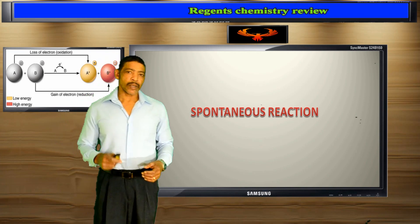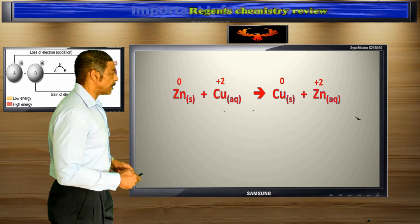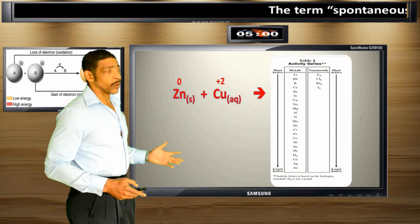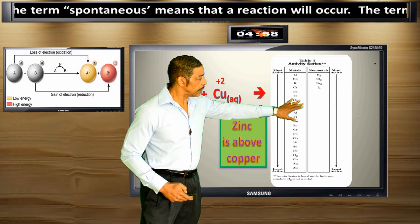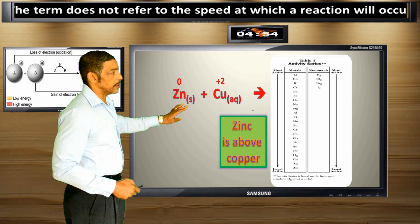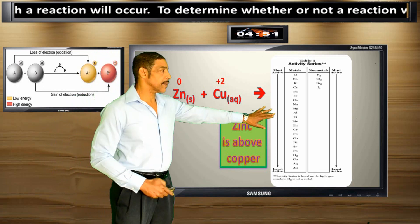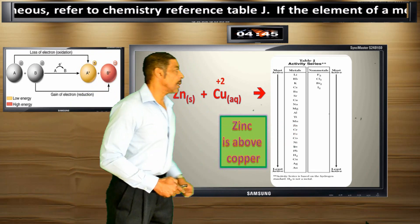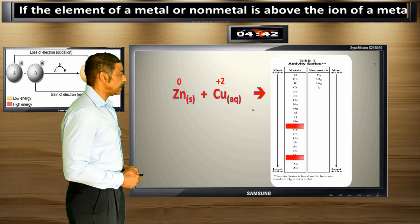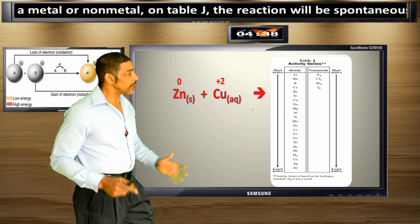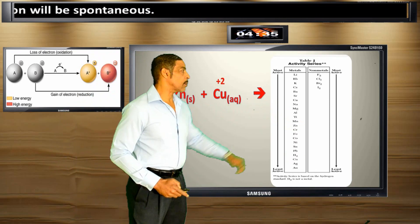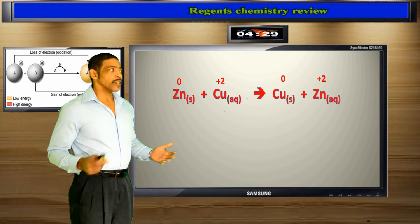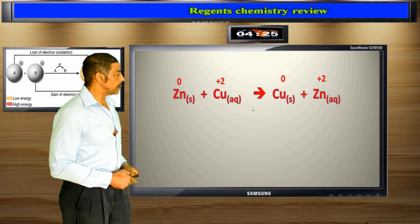At some point you may be required to determine whether or not a single replacement reaction is spontaneous. To determine whether or not a single replacement reaction will actually occur, refer to reference table J. If the symbol for the element in the equation — in this case zinc — is above the symbol for the ion in the equation — in this case copper — then the reaction will be spontaneous. Since zinc is above copper on table J, the zinc atom will actually reduce the copper 2 ion, and the reaction will indeed occur, meaning that the reaction will be spontaneous.